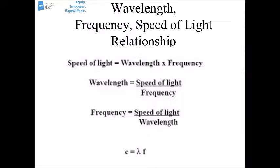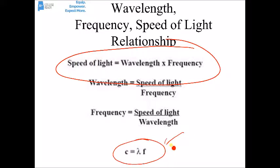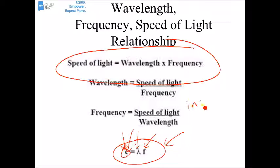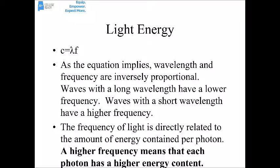The equation on this page relates the speed of light, wavelength, and frequency: C = λν. C is the speed of light (a constant), lambda (λ) is the wavelength measured in meters, and frequency (ν) is how many waves occur per second, typically measured in hertz. Since the speed of light must stay constant, as wavelength increases frequency must decrease — wavelength and frequency are inversely proportional. Waves with a longer wavelength have a lower frequency; waves with a shorter wavelength have a higher frequency.